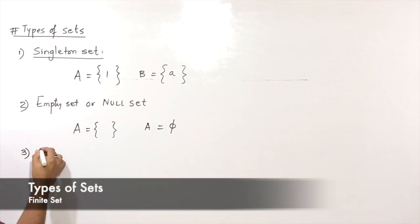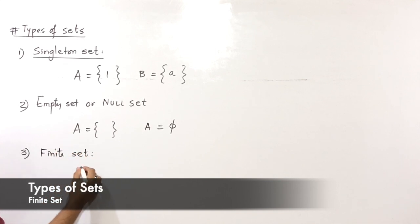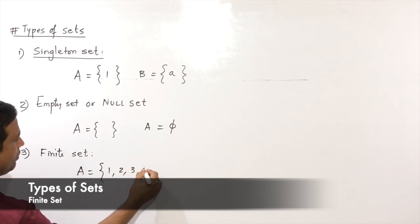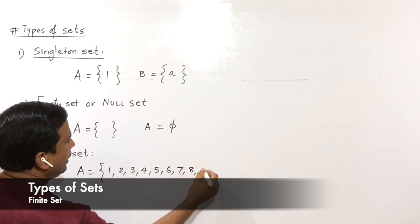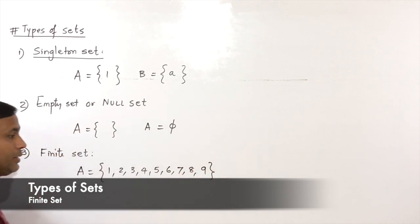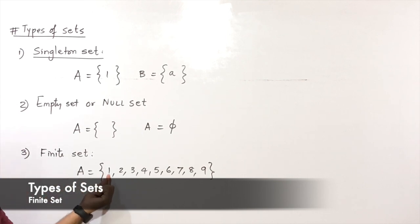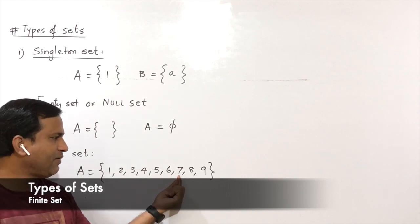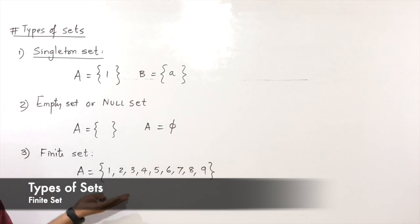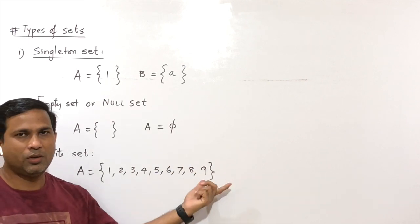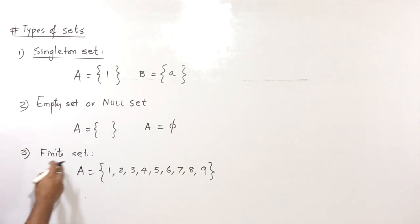The third type is the finite set. A set which includes numbers or elements that are terminated at a certain place. If you observe set A, you have numbers 1, 2, 3, 4, 5, 6, 7, 8, 9 — after that it gets terminated. Elements which we can count are said to be a finite set.